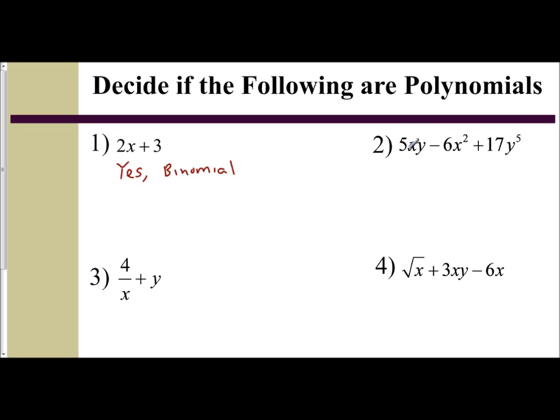If I go to number 2, 5xy minus 6x squared plus 17y to the 5th, we want to determine if this is a polynomial. I got my variables x and y, x squared, y to the 5th, I see three terms. So this is a polynomial, and since it's three terms, we name it as a trinomial.